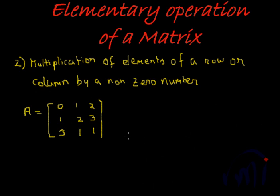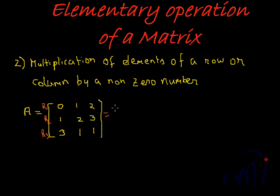The second elementary operation says: multiplication of elements of a row or a column by a non-zero number does not alter the nature of the matrix. What it means is, going back to the same matrix with r1, r2, and r3 — we can multiply any row by a non-zero number and get the same nature of the matrix.